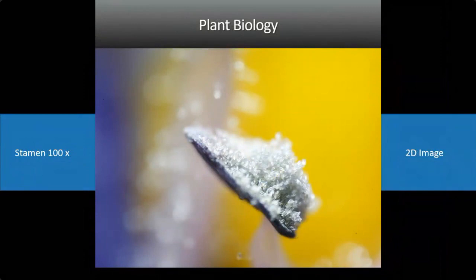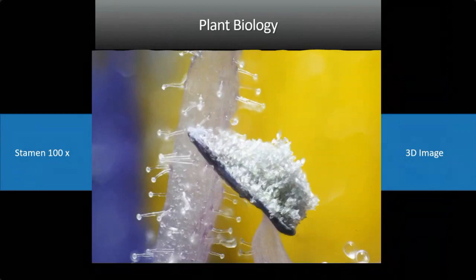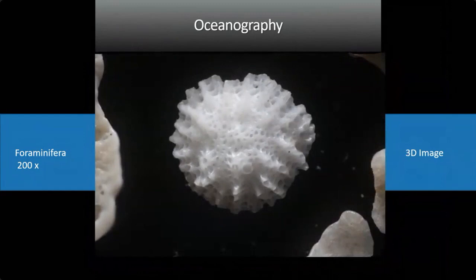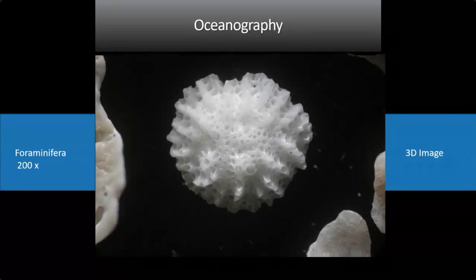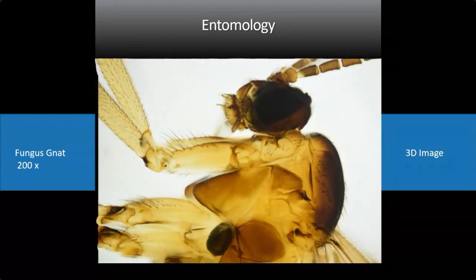In plant biology, which is a very important application since you're often looking at 3D objects, here's the stamen of a water hyacinth in 2D and in 3D. Now you can see all the trichomes, the pollen, and the opened anther — it gives you a lot more information. For oceanography and marine biology, here's a foraminifera in 3D — a tiny protist that becomes a grain of sand after it dies. And for entomology, here's a 2D picture of a tiny fungus gnat and here it is in 3D.